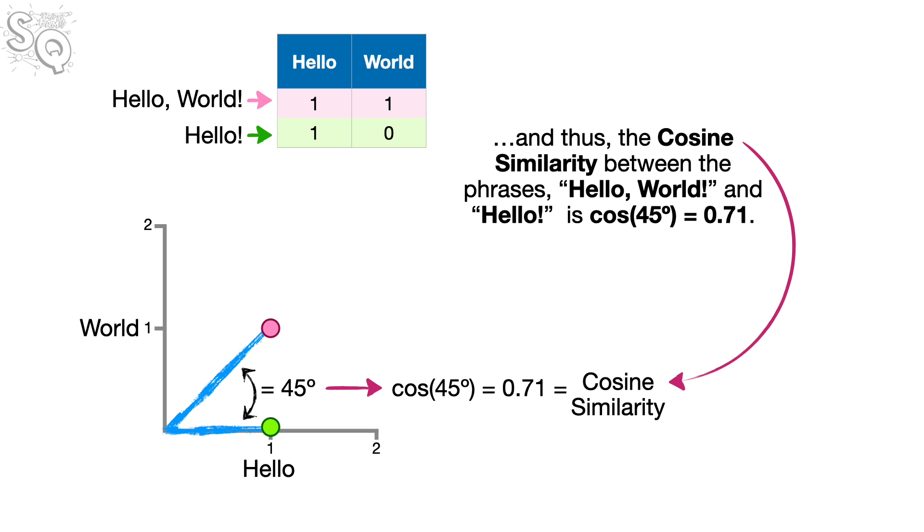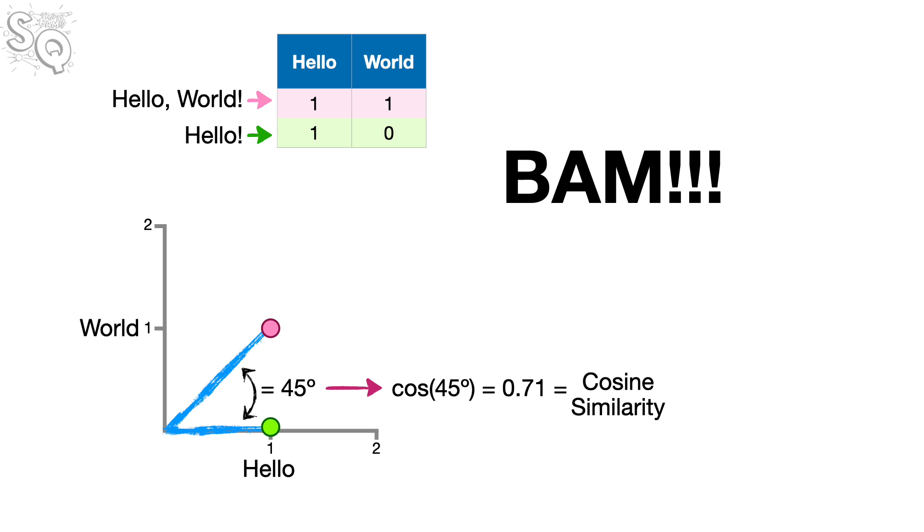And thus, the cosine similarity between the phrases Hello, world! and Hello! is the cosine of 45 degrees, which equals 0.71. Bam!